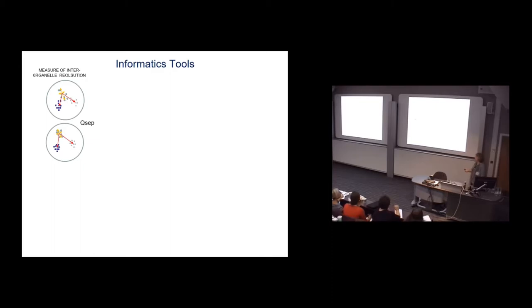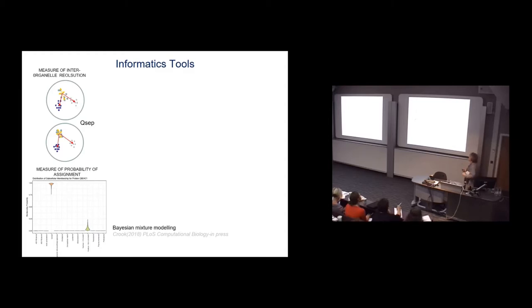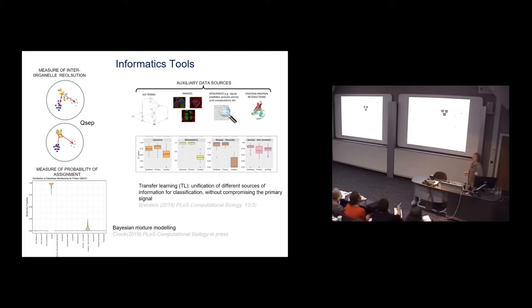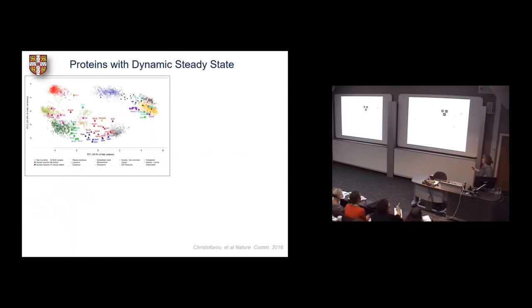We've had to develop some pretty hefty machine learning tools to be able to deal with these data, not only to look how good our methods are and compare them with other people's workflows, because clearly we want the best resolution that we can possibly get between different organelles. We've also just come up with a Bayesian mixture modeling method to give the probabilities of proteins that are in more than one place, and also using orthogonal data sets such as immunohistochemistry data to add confidence to our assignments of proteins to different subcellular locations.